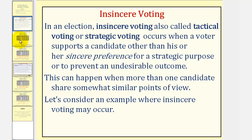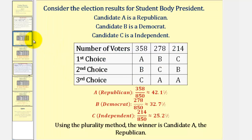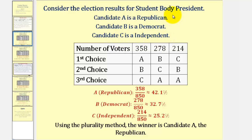Let's look at an example. Here are the election results of a student body presidential election where candidate A is a republican, candidate B is a democrat, and candidate C is an independent. For the purpose of illustration, let's assume the democrat and independent share common points of view on several issues.